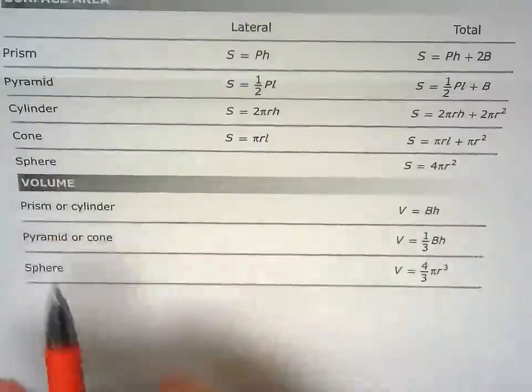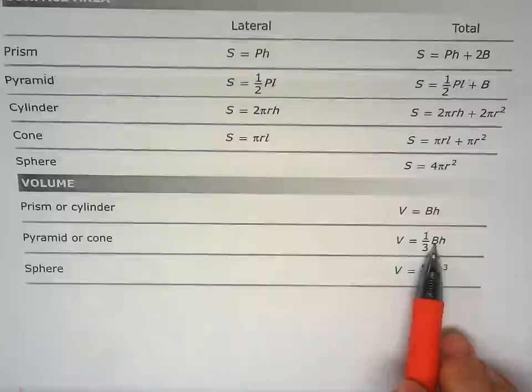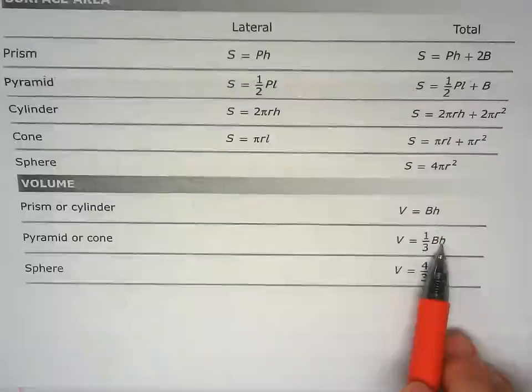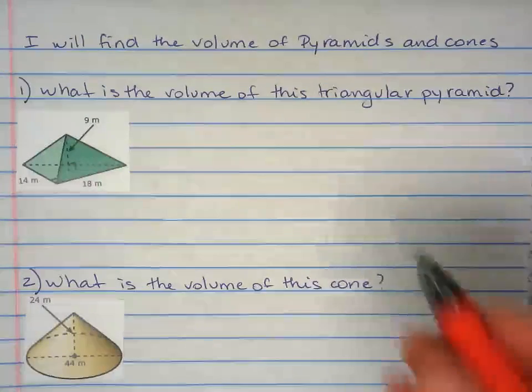So looking at your formula chart, volume of pyramid, you're gonna do the area of the base times height and divide that by three. So let's copy down the formula.